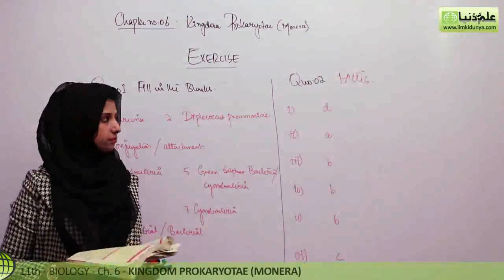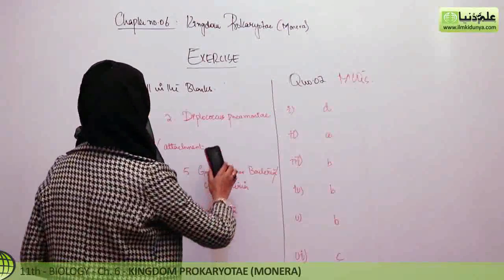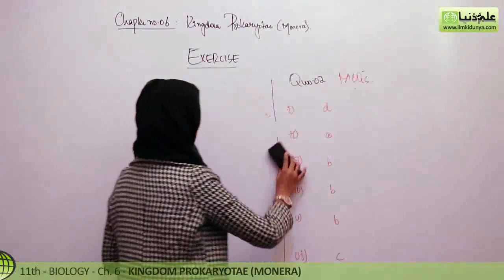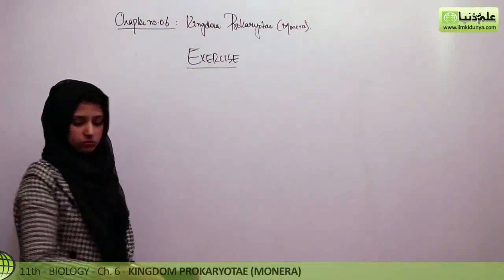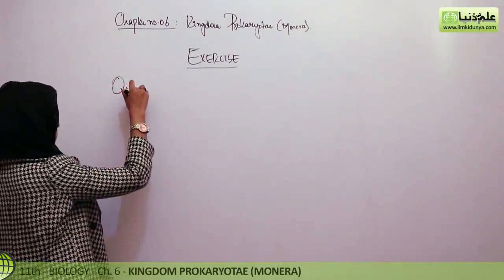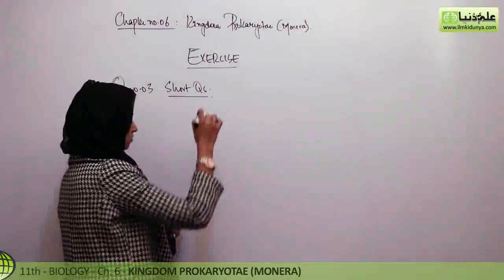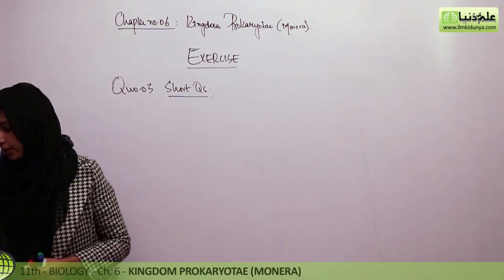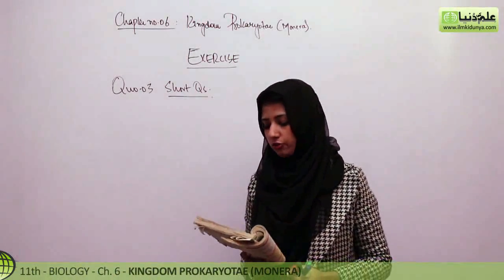Bacterial endospores function in survival. MCQs are complete. After this, short questions are discussed. The first short question is: what are the main features used to define prokaryotes?